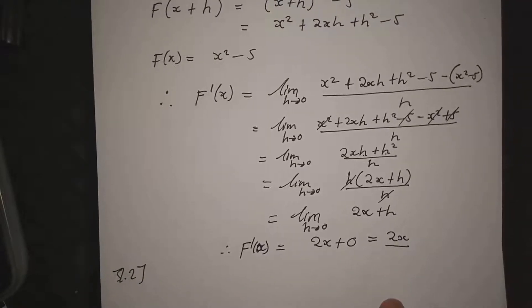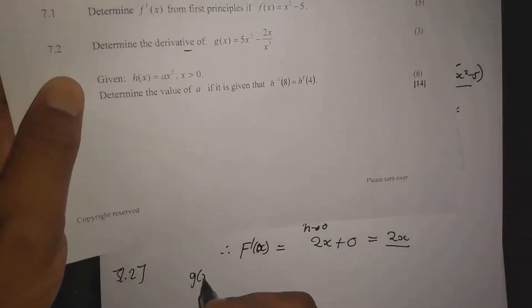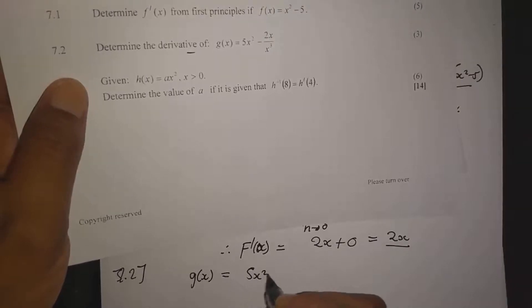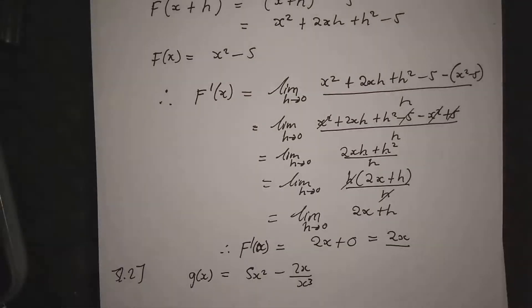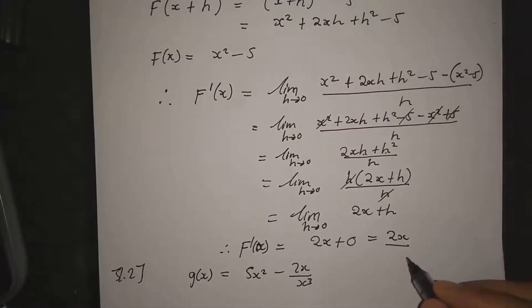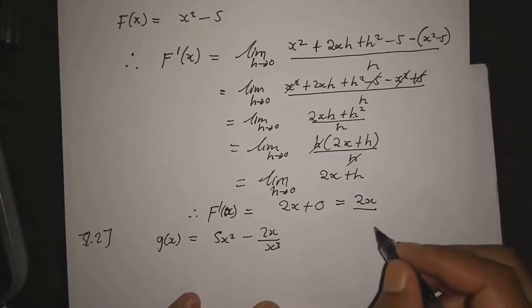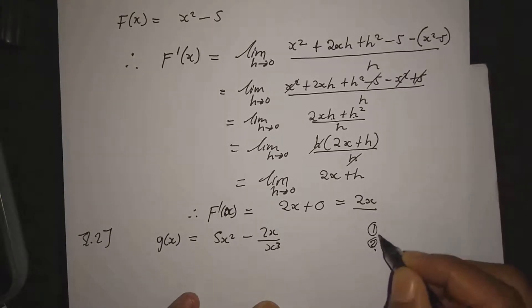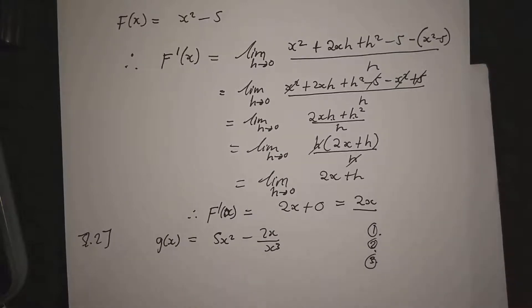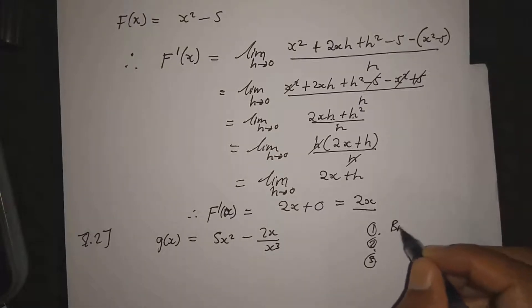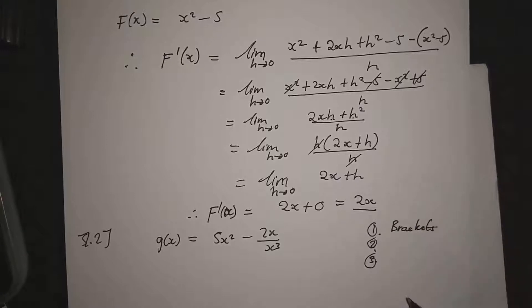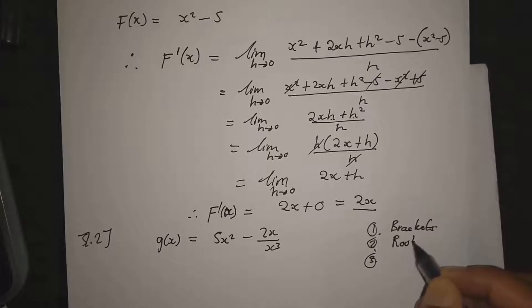Question 7.2: determine the derivative of g(x) = (5x² - 2x) / x³. There is an order for simplifying before applying rules of differentiation: first deal with brackets, then roots, then fractions.